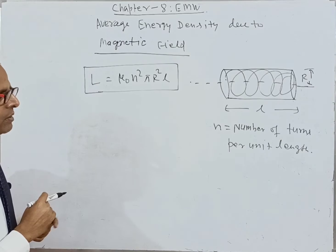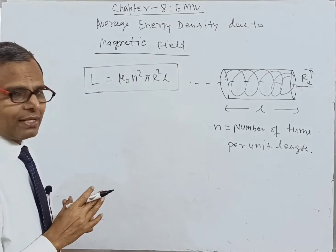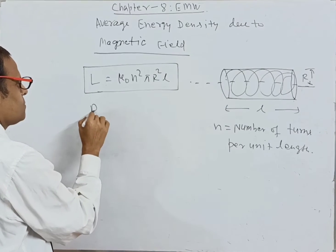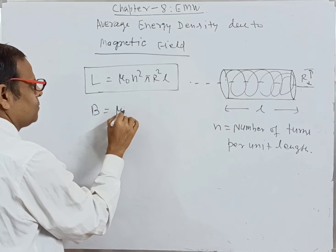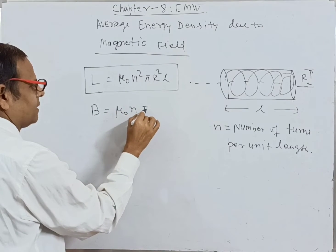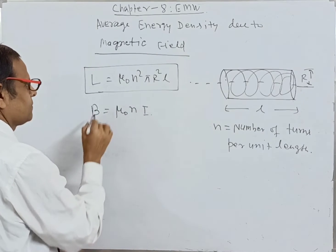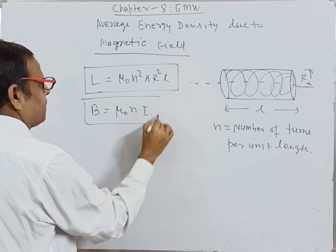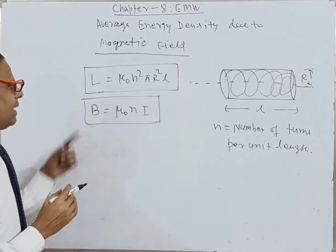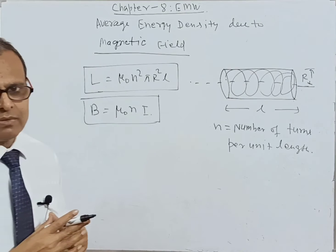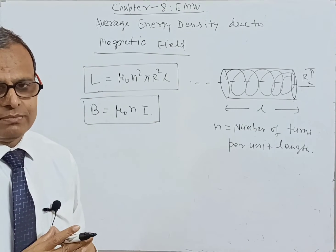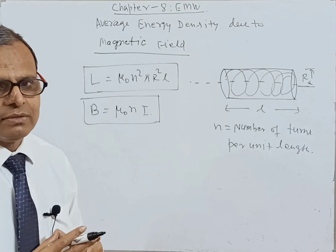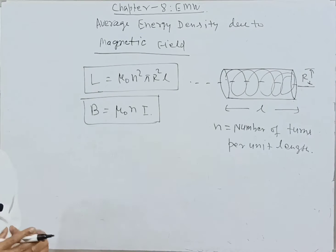Now, the magnetic field due to the solenoid is also given by B = μ₀ni. Both L and B play a very important role in finding the average energy density.